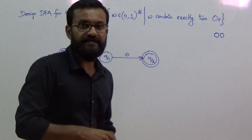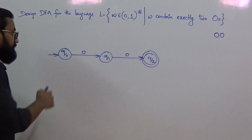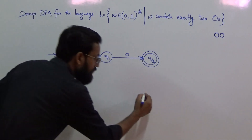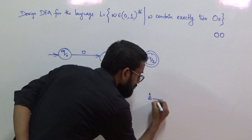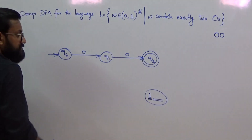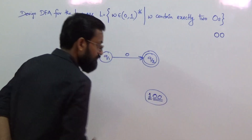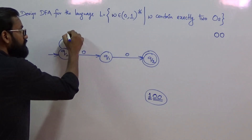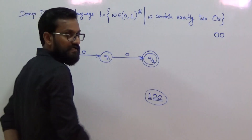Now we extend this transition diagram by applying inputs not yet defined for each state. From q0, if we apply input 1, the machine consumes that 1 and still needs to consume exactly two more 0s to reach the final state. So from q0, the transition on input 1 should go back to q0 — the state from which it can consume exactly two 0s to reach the final state.